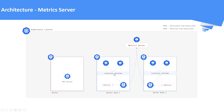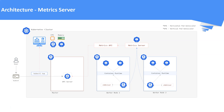The metrics server implements the metrics API, which creates the API components internally. This API allows you to access CPU and memory usage for the nodes and pods in your cluster. It is the API server that consumes the metrics via the metrics API. Once we query the API server using the kubectl top command, we will be able to see the CPU and memory utilization for the pods and nodes. This data will also be used by horizontal pod autoscaler and vertical pod autoscaler.